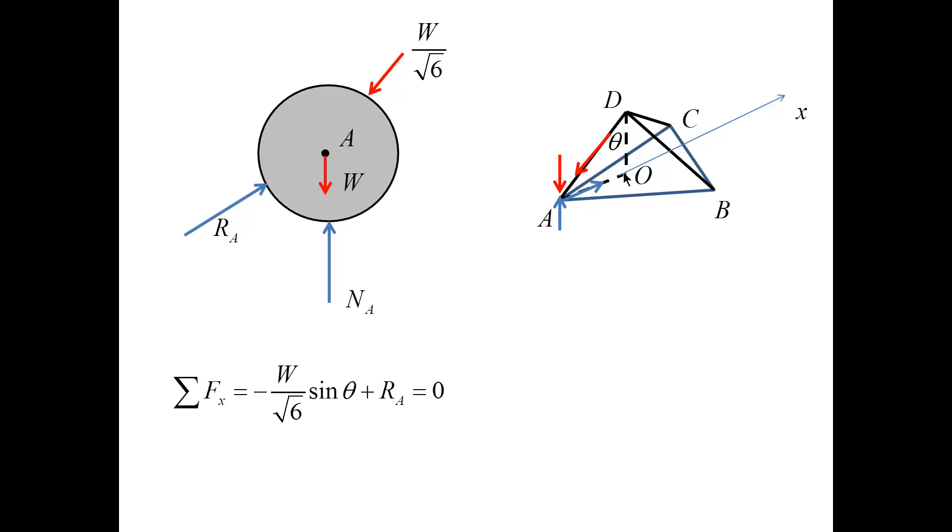This engages only the force W over square root of 6 projected with sine theta negatively plus R sub A. This gives us that R sub A equals W over square root of 18. And of course, the other two balls will exert the reaction forces of the same magnitude. Thank you.